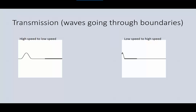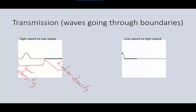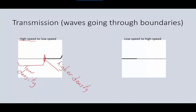The next phenomenon we're going to look at is called transmission. This is when we talk about waves going through boundaries. Depending on the medium that the wave is traveling in and the media it is going between will determine how it behaves as it goes through the boundary. For example, the rope on the left goes from low density to higher density. The lower density rope allows the wave to travel at a higher speed, but when we get to the boundary and the density changes, that higher speed suddenly slows down.